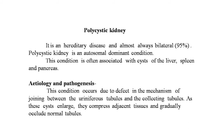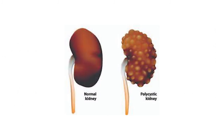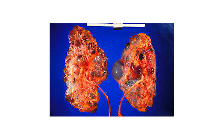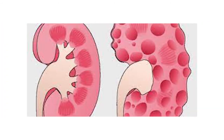As these cysts enlarge, they compress adjacent tissues and gradually occlude normal tubules. Here is a good image comparing the normal kidney with the polycystic kidney, showing how polycystic kidneys look. Additional animated pictures of the polycystic kidney are also shown.